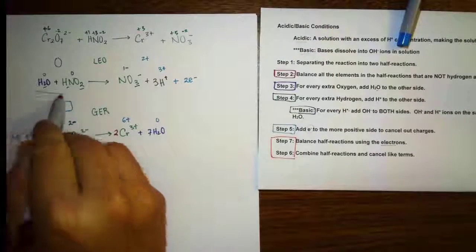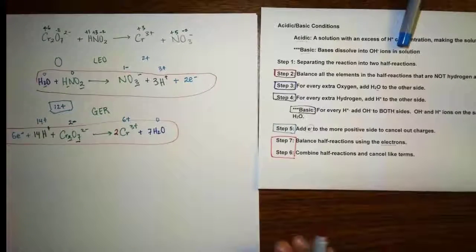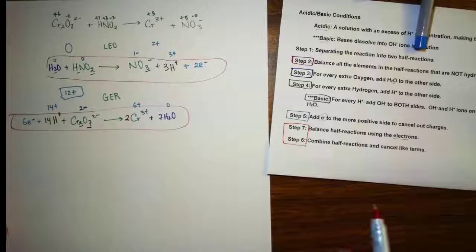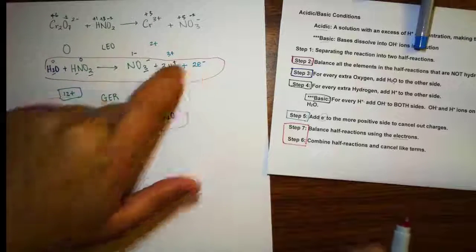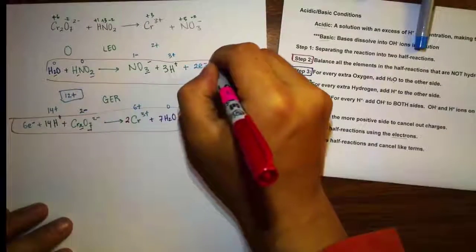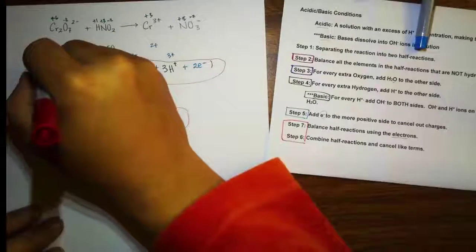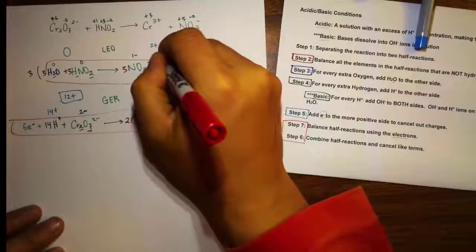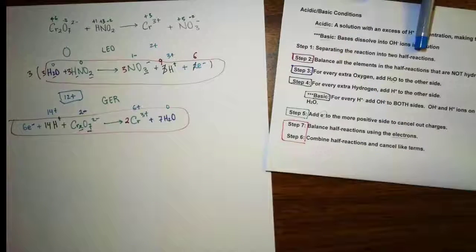Now we have our LEO and GER half-reactions. The last step is to combine them. But wait — the LEO half-reaction has 2 electrons and the GER has 6. We need to make the electrons equal, so we multiply the entire LEO half-reaction by 3. That gives us 3 HNO₂, 3 H₂O, 9 H⁺, and 6 electrons. Good thing we caught that.